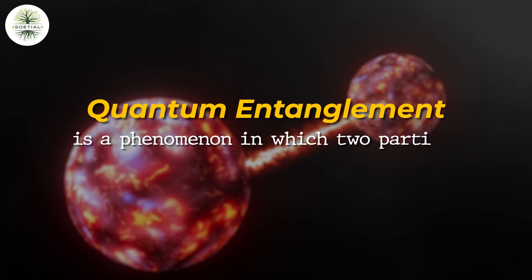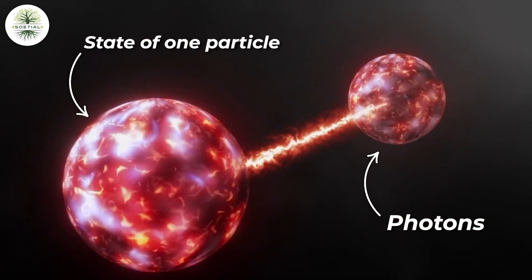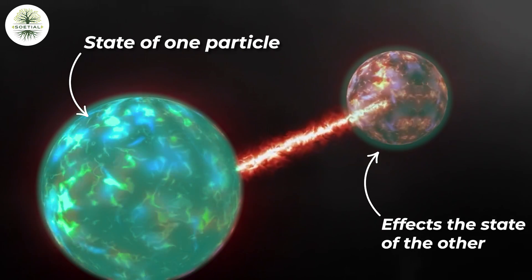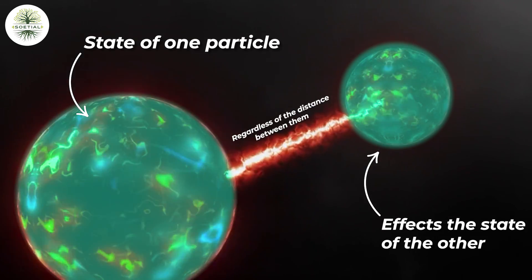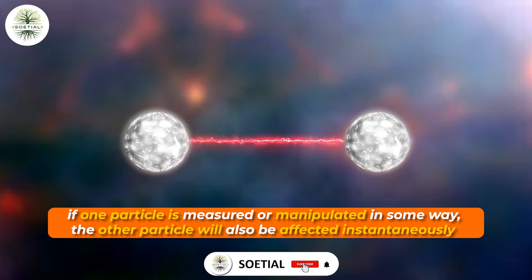Quantum entanglement is a phenomenon in which two particles, such as electrons or photons, become connected in such a way that the state of one particle affects the state of the other, regardless of the distance between them. This means that if one particle is measured or manipulated in some way, the other particle will also be affected instantaneously, even if they are separated by vast distances.